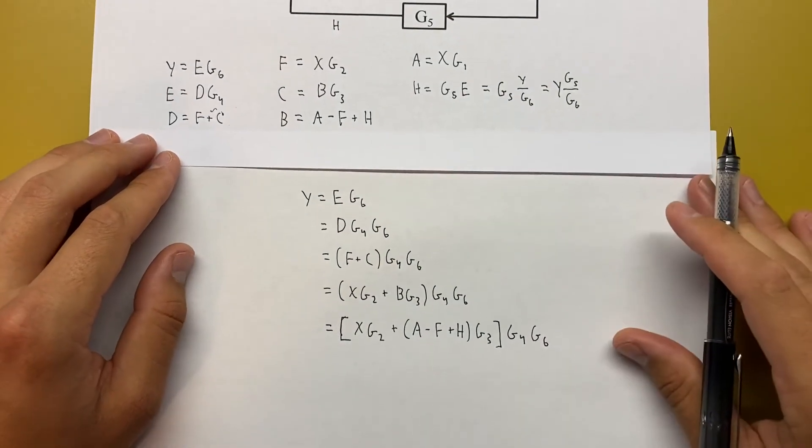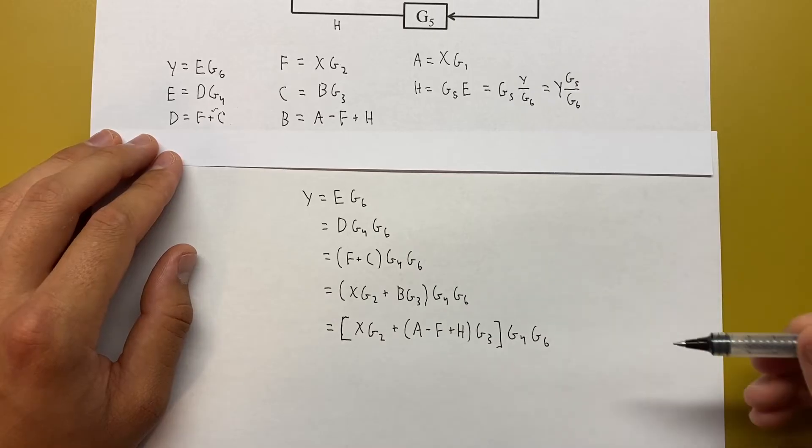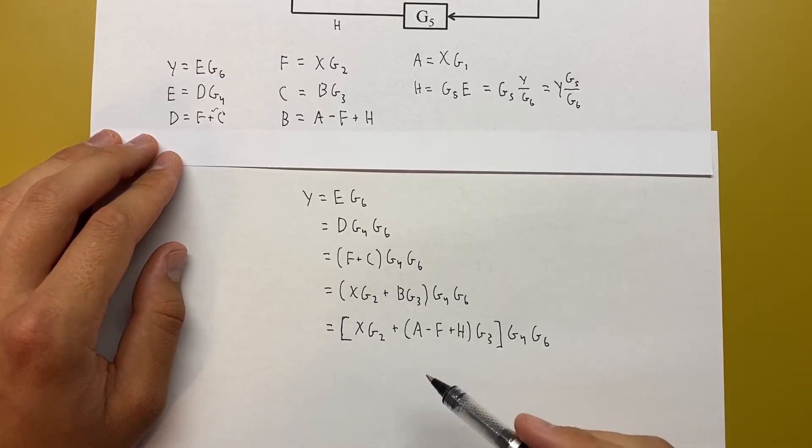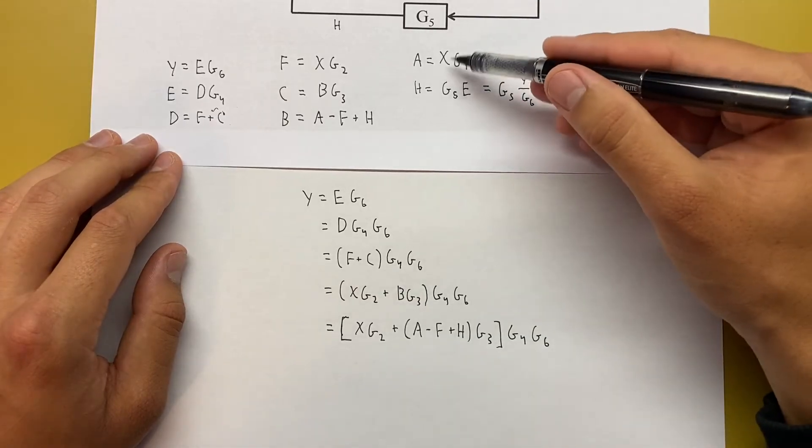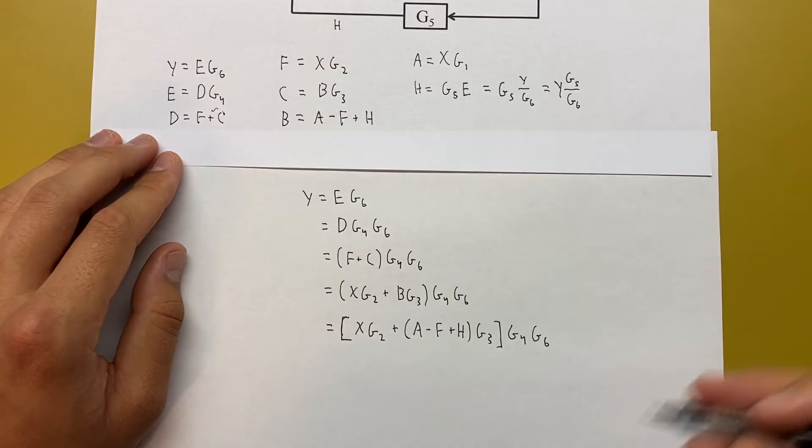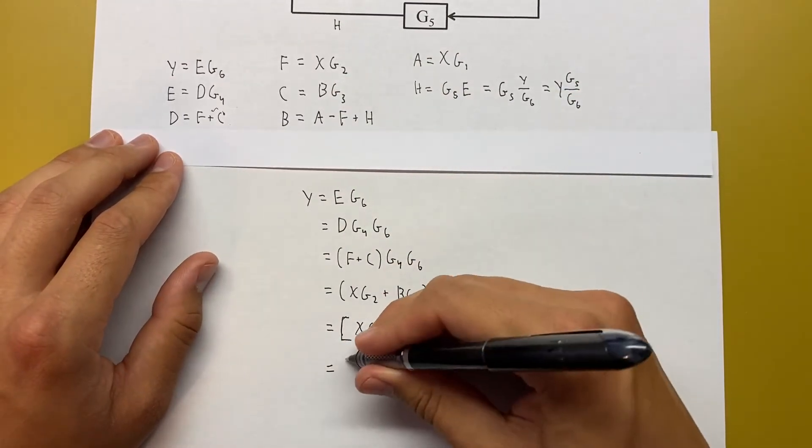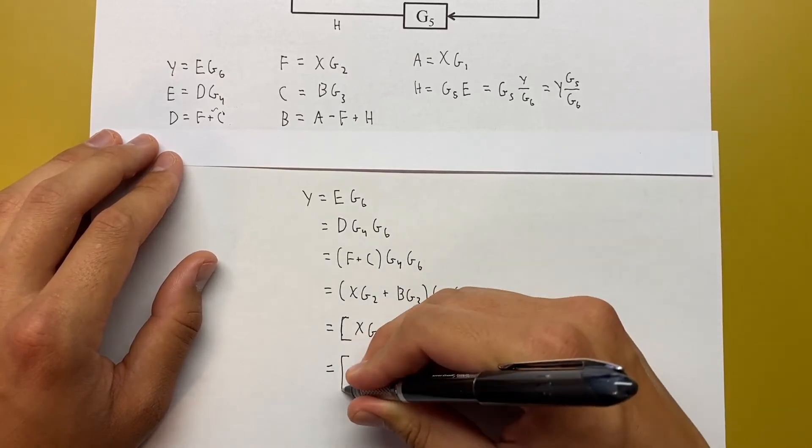Now we have to replace A, F, and H. Luckily for us, we're sort of at the end of the line of replacing things here, because A we have in terms of X, F we have in terms of X, and H we have in terms of Y. So this is the last time we'll need to look up here.